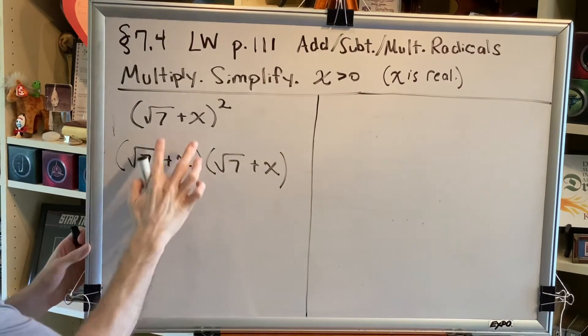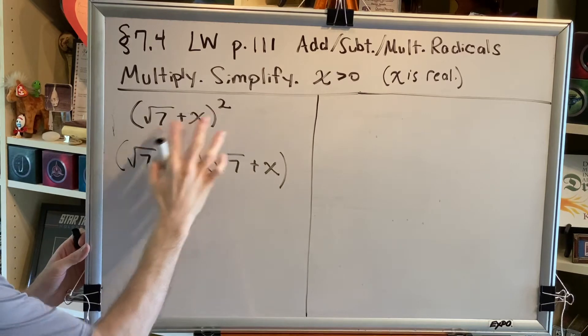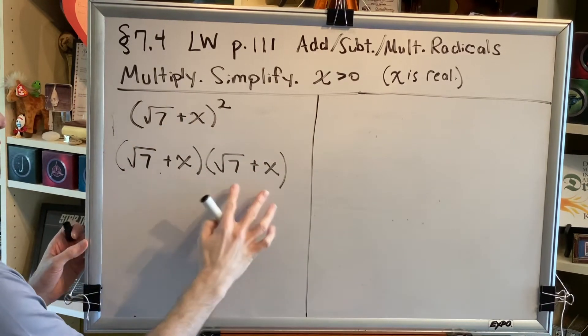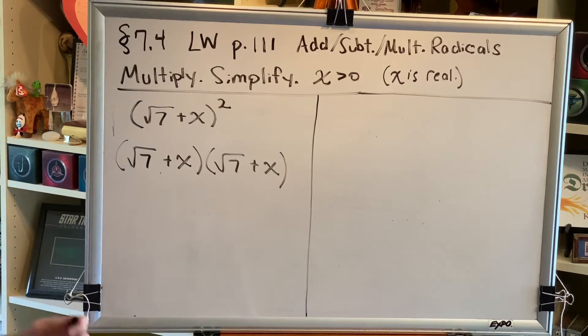This is very important. When two things added in parentheses are raised to the power of 2, this is an example of FOIL, binomial times binomial. Let's FOIL this out.